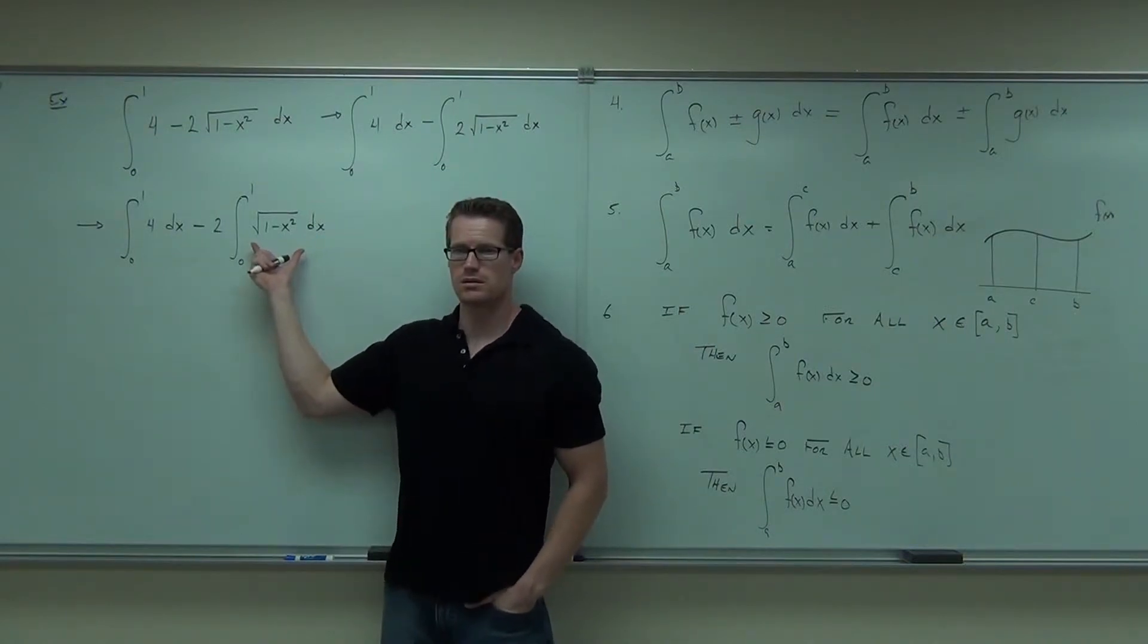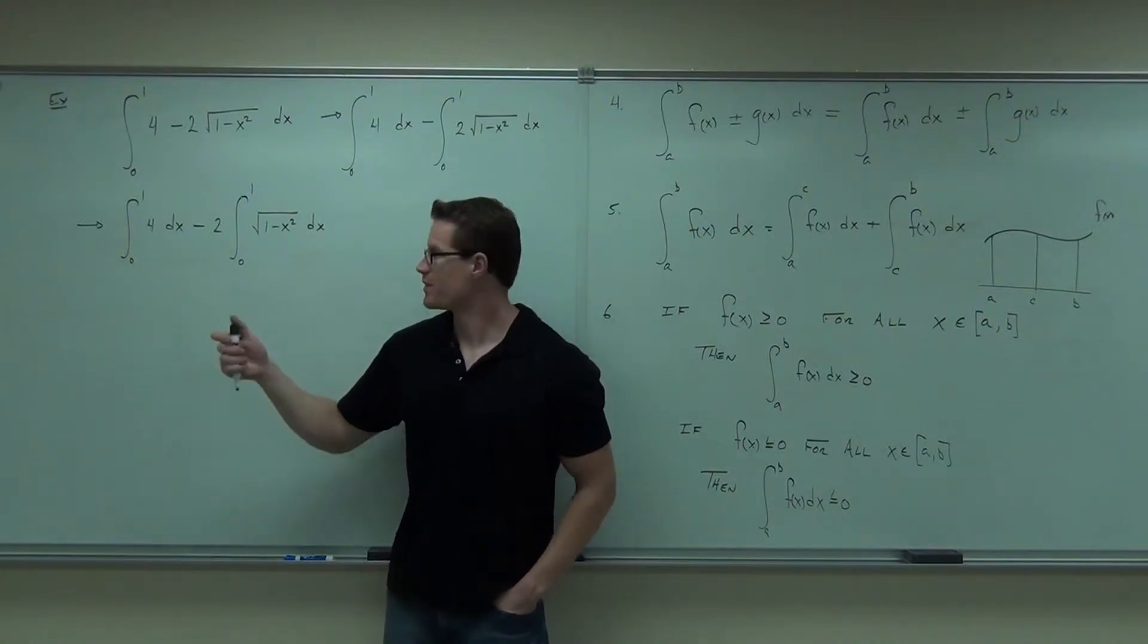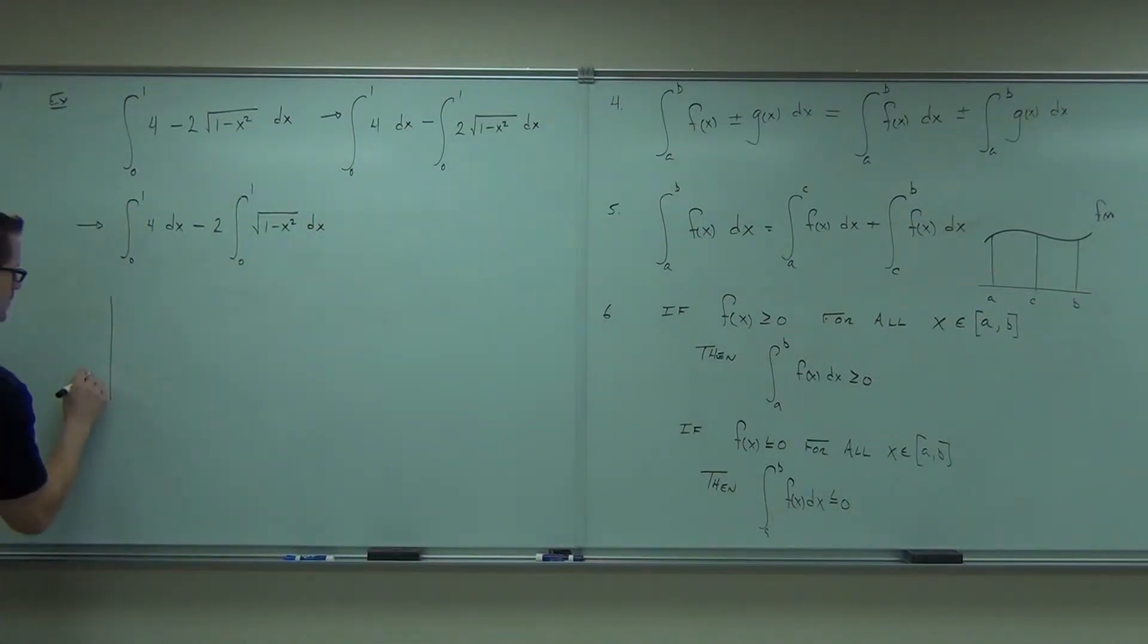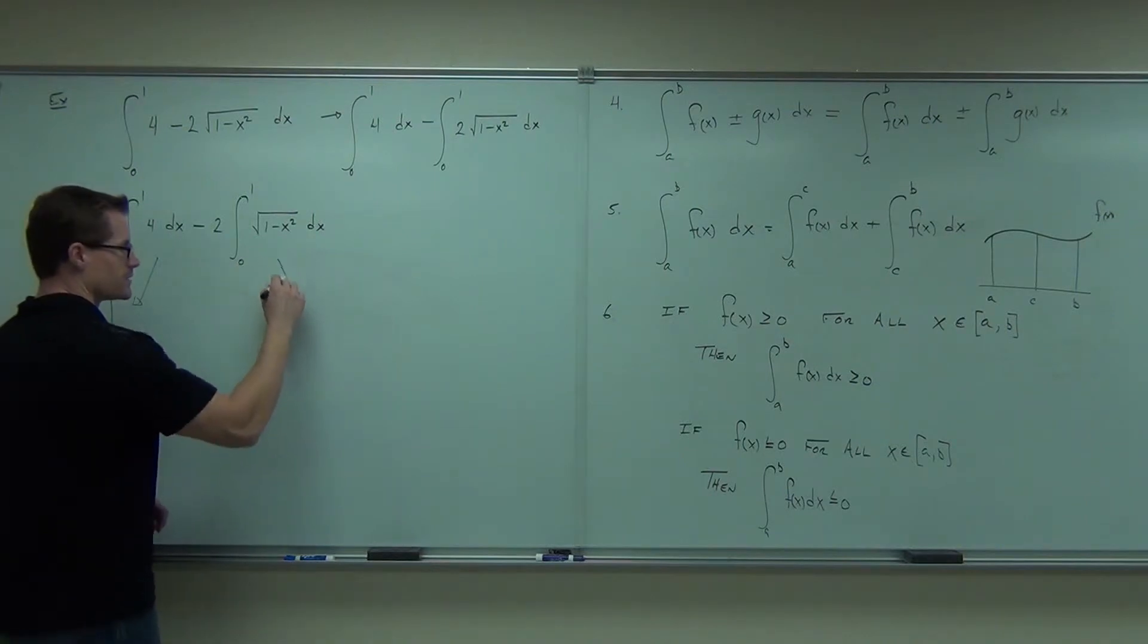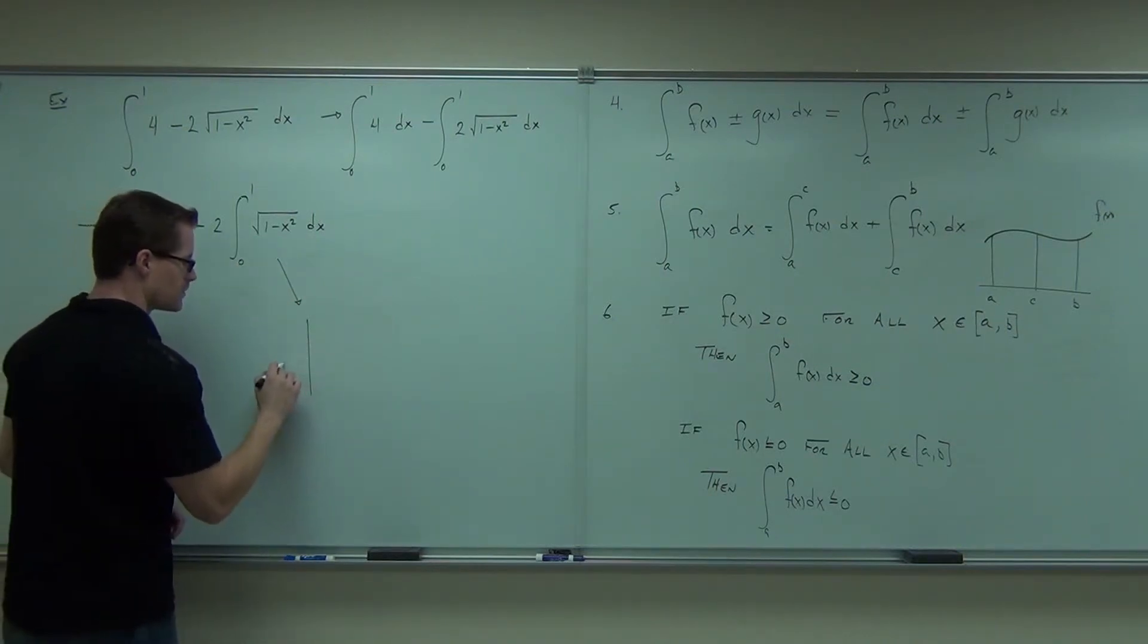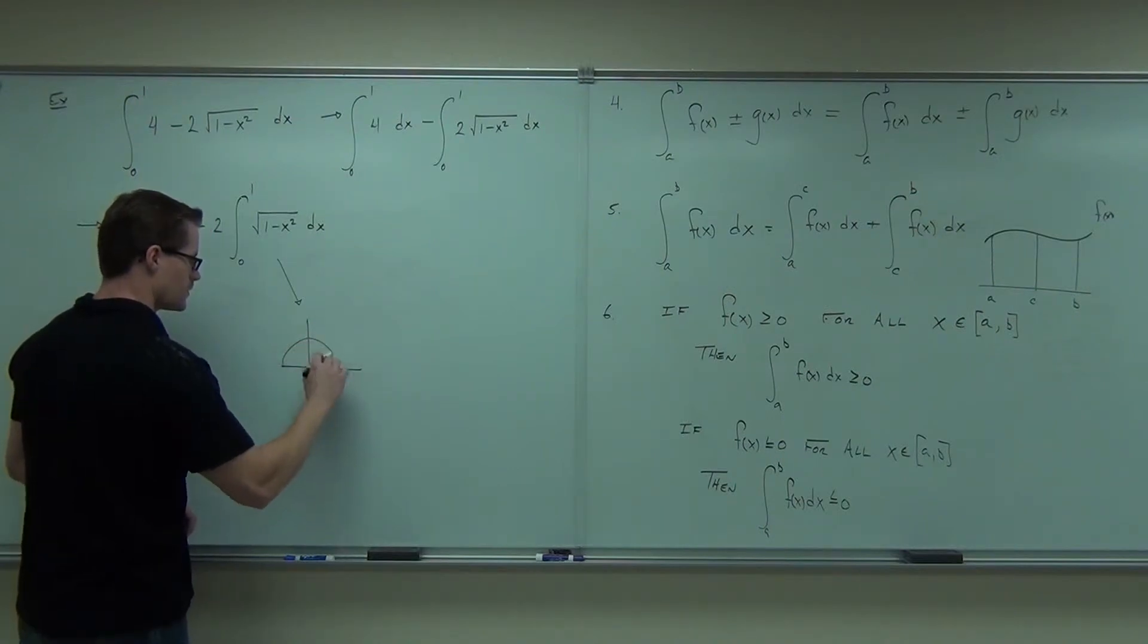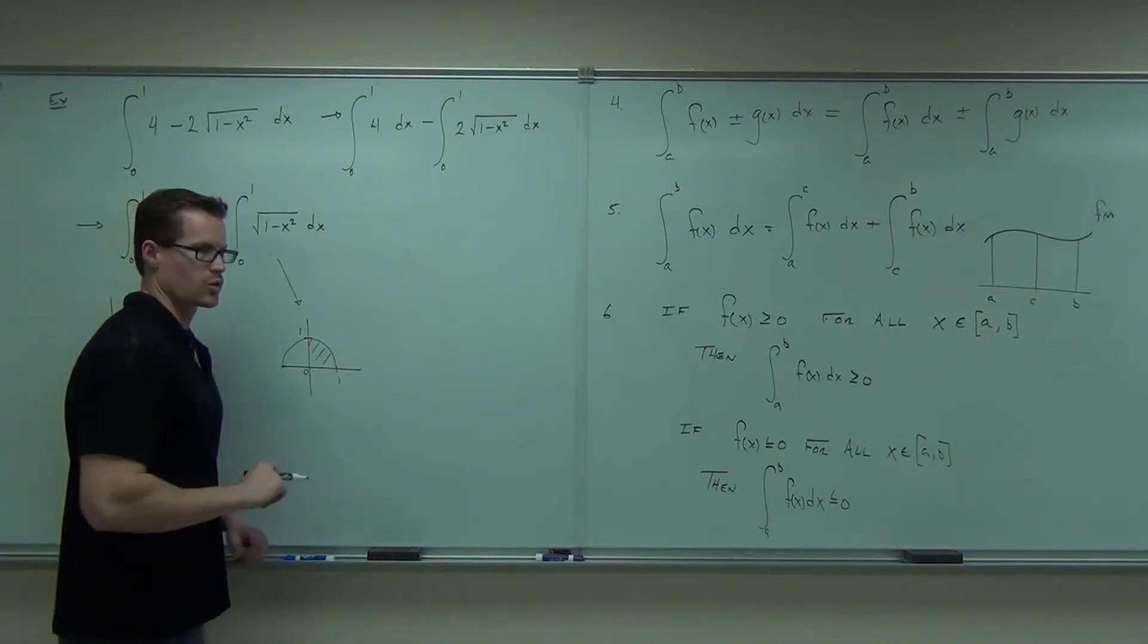This one, what is that? That's a half circle, and I'm going from 0 to 1. We've done that problem already today. So what this says is 4, 0 to 1. What this one says is a quarter of a circle.